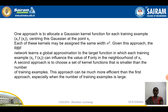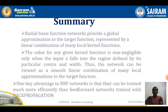The third approach is more efficient than the first, especially when the number of training examples is large. In this case the number of kernel functions may be smaller than the number of training examples. To summarize the radial basis function network: it provides a global approximation to the target function and represents a linear combination of many local kernel functions. The value of any given kernel function is non-negligible only when the input x falls into the region defined by its particular center and width.